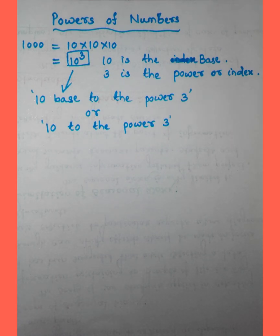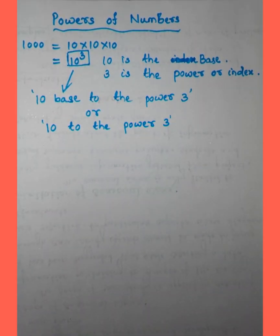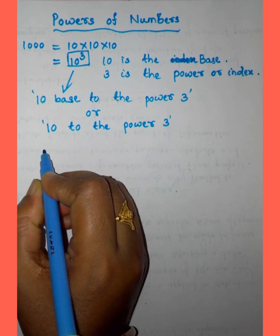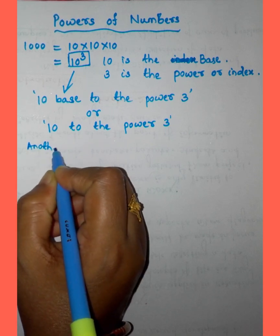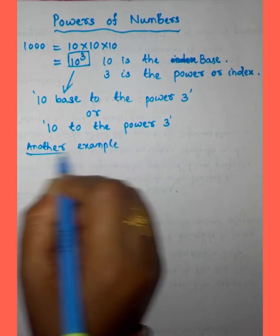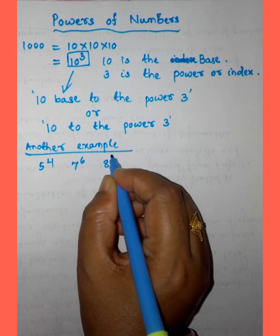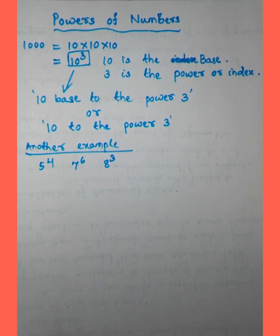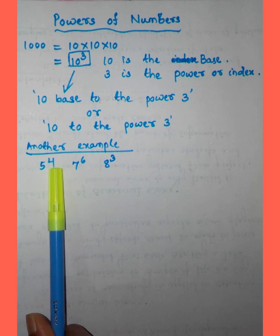We may have any number as the base and any number as the power. For example, we can also write 5 to the power 4, 7 to the power 6, 8 to the power 3. We can write any number in the base and any number in the power or index.